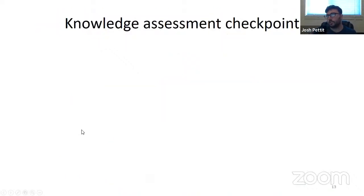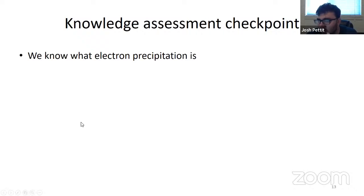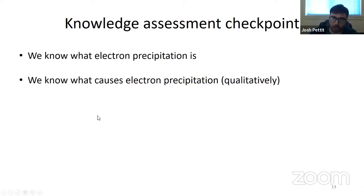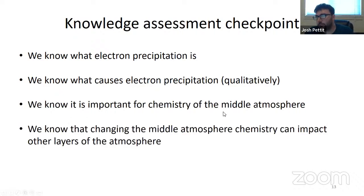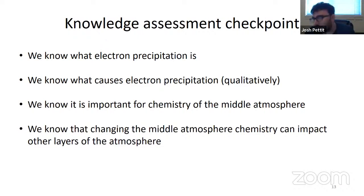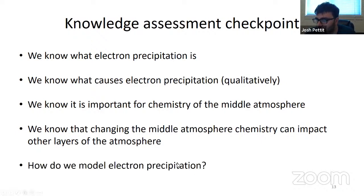So to acknowledge an assessment here: we know what electron precipitation is, we know what causes it qualitatively, we know it's magnetospheric waves that cause pitch angle scattering, and we know it's important for the middle atmosphere chemistry. But it's important to note that we don't know the quantitative impacts on other regions of the atmosphere — things like the troposphere, the ionosphere and thermosphere. But then again, how do we model this? How would we model electron precipitation?